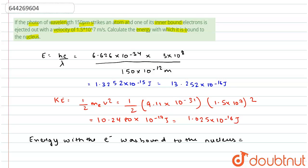The energy with which the electron is bound to the nucleus equals 13.25 into 10 power minus 16 joules minus 1.025 into 10 power minus 16 joules. So this equals 12.225 into 10 power minus 16 joules.